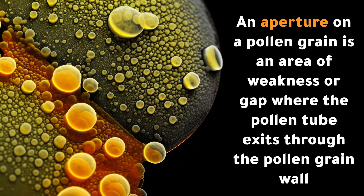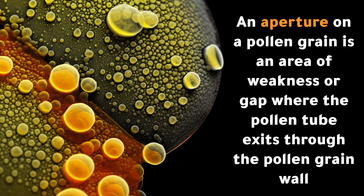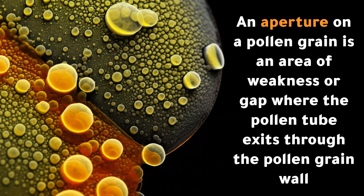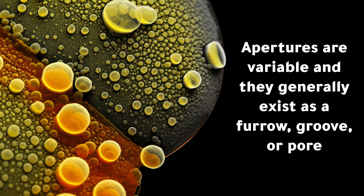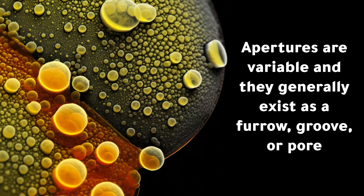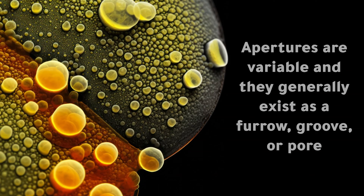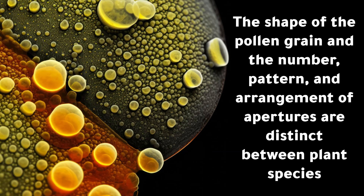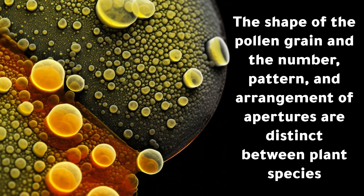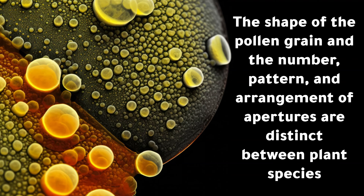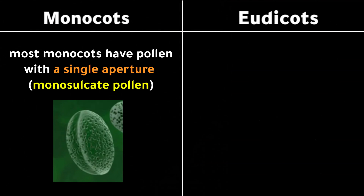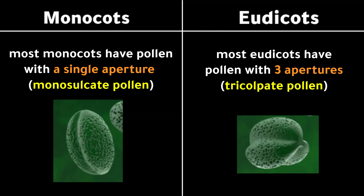An aperture on a pollen grain is an area of weakness or gap where the pollen tube exits through the pollen grain wall. Apertures are variable and generally exist as a furrow, groove, or pore. The shape of the pollen grain and the number, pattern, and arrangement of apertures are distinct between plant species. Most monocots have pollen with a single aperture, and most eudicots have pollen with three apertures.